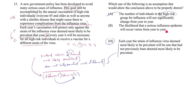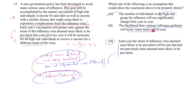Answer choice B says the likelihood that a serious influenza epidemic will occur varies from year to year. Of course it does — how bizarre would it be if it didn't? If every single year had exactly a 12.8% chance of a serious influenza epidemic, that'd be very strange. But the point is: how does that help us get from the premise to the conclusion? Knowing the probability of an epidemic changes from year to year doesn't tell us anything about whether a different strain must be used.